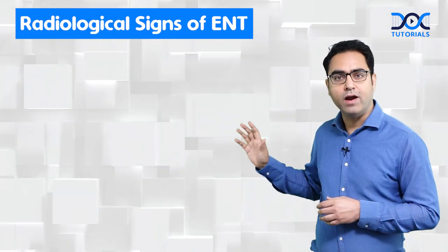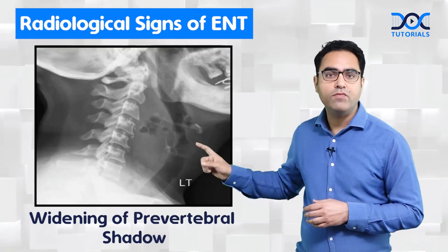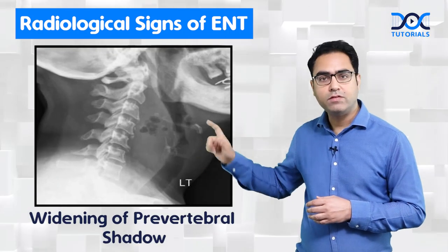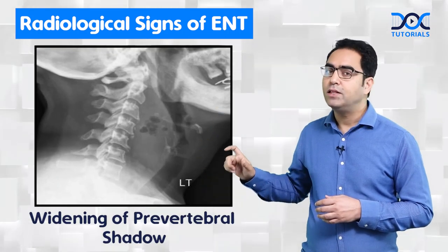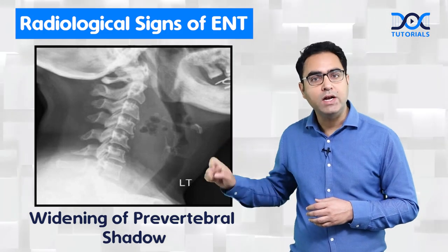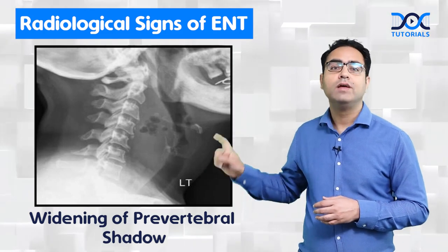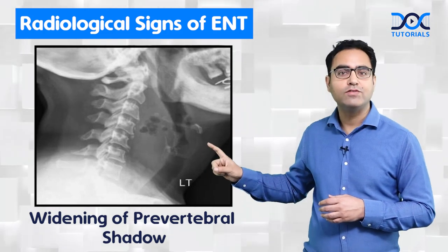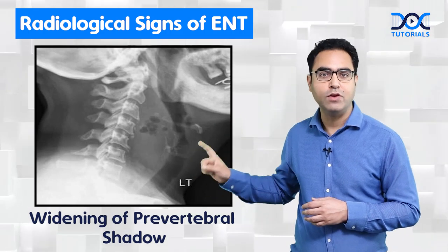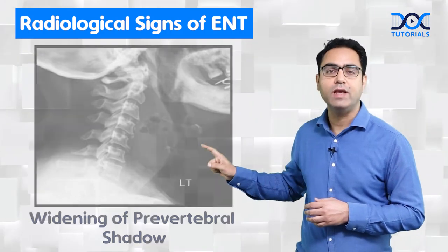The next sign shows widening of the prevertebral shadow with a normal cervical spine, and the child is having respiratory difficulty with stridor. This is a case of acute retropharyngeal abscess. Can you see the widening of the prevertebral shadow?